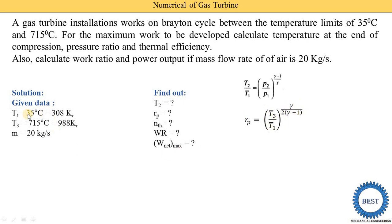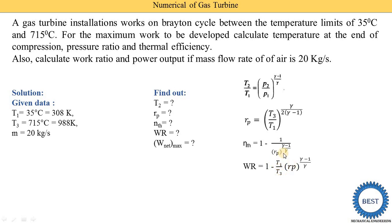For that equation, T1 and T3 are required, and both are given. After finding the pressure ratio, we calculate T2. Then we find thermal efficiency using: eta = 1 − 1 / (RP ^ ((gamma − 1) / gamma)), or alternatively as net work divided by heat supply. For work ratio: WR = 1 − (T1 / T3) * RP ^ ((gamma − 1) / gamma). For maximum net work: W_net_max = m * Cp * (T1 + T3 − 2 * sqrt(T1 * T3)).